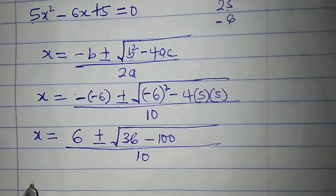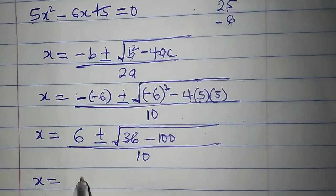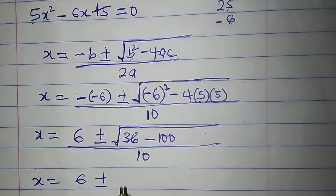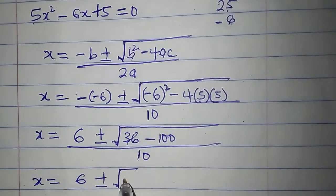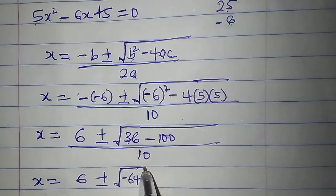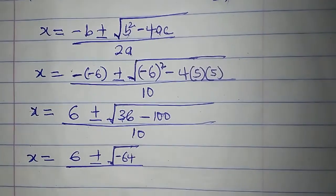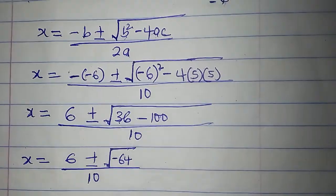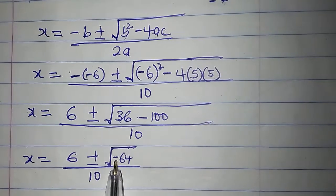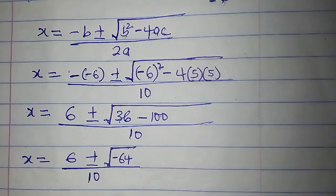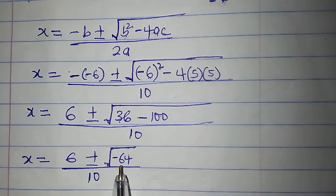We have X equal to 6 plus or minus the square root of 36 minus 100, which is minus 64, all over 10. The next thing is to determine the square root of negative 64. Under the set of real numbers, there is no value for the square root of minus 64.